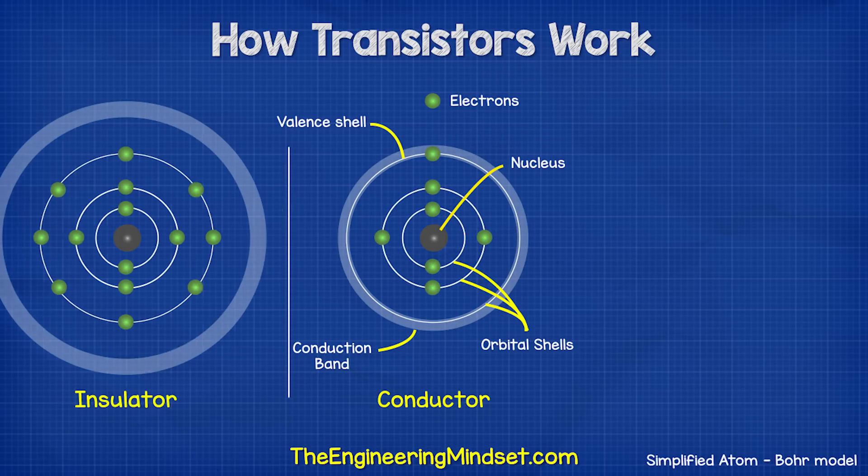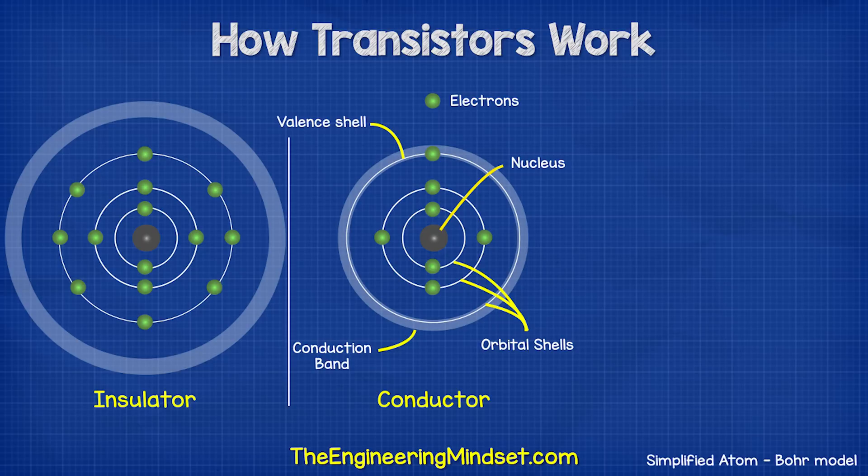With an insulator, the outermost shell is packed. There's very little to no room for an electron to join. The nucleus has a tight grip on the electrons and the conduction band is far away, so the electrons can't reach it to escape. Therefore, electricity cannot flow through this material.